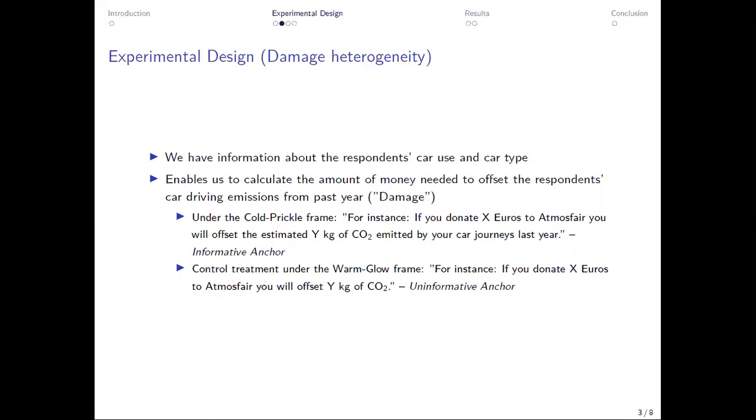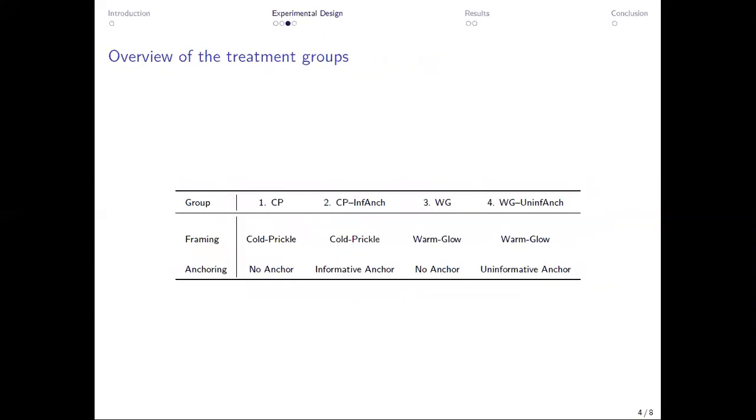When under the warm glow frame, we have a control treatment where we just say, if you donate X euros, which is again the damage amount, you will offset Y kilograms of CO2, which we call the uninformative anchor because it still provides a number which can serve as an anchor, but it doesn't convey any information content about this number. And then we run a two by two design. So we have two cold prickle groups and two warm glow groups. And in each, there's one group without any anchoring and the other group that saw the respective anchor.